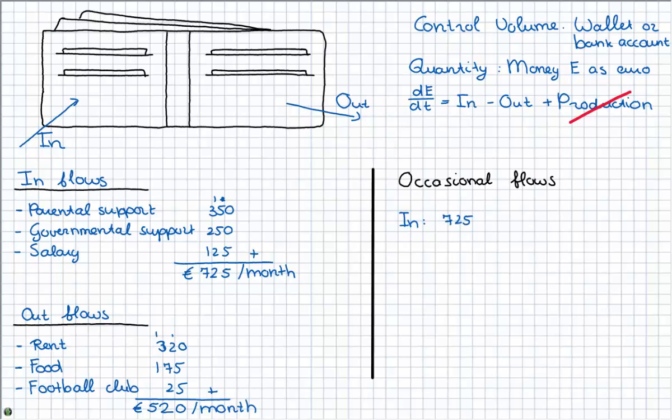So the inflows, the occasional 25 euros plus the normal 725 euros makes 750 euros this particular month. And the outflows are the 520 euros plus the 175 euros which makes 695 euros this month.